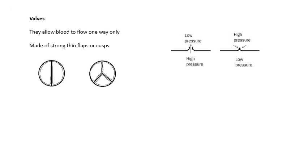Valves are very important — they only allow blood to flow one way, the correct way. The valves are made up of strong, thin flaps of skin, or cusps. If you've got high pressure on one side and low pressure on the other, blood will flow through the valve. If the pressure reverses, the flaps close and blood can't flow. So whether the valve is open or closed depends on the pressure differential — the difference in pressure either side of the valve.